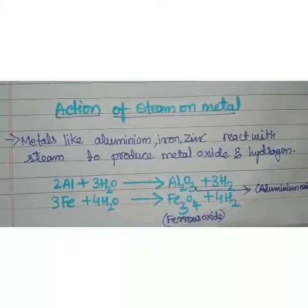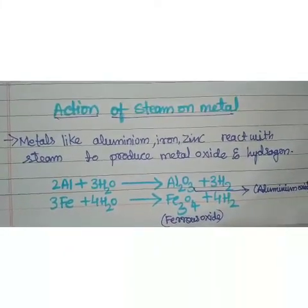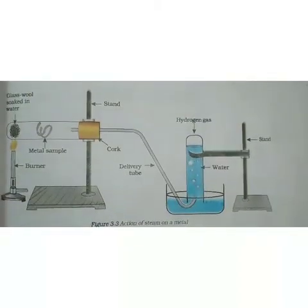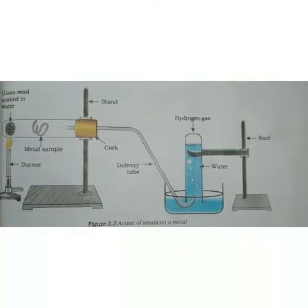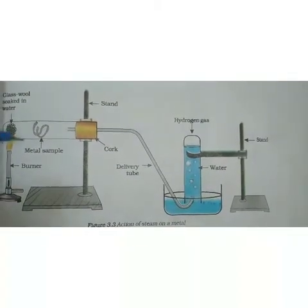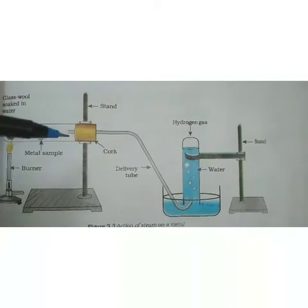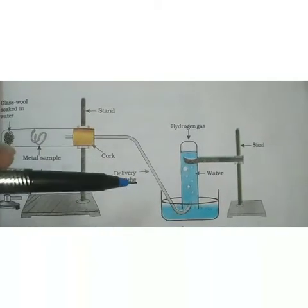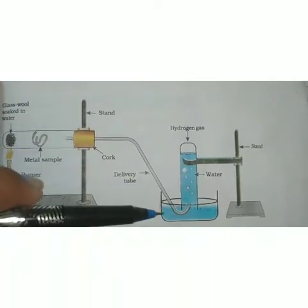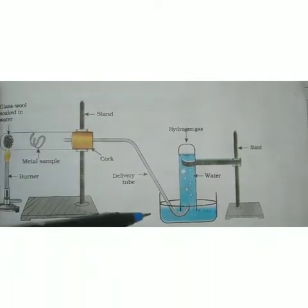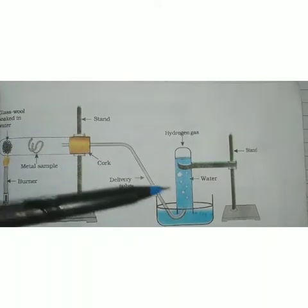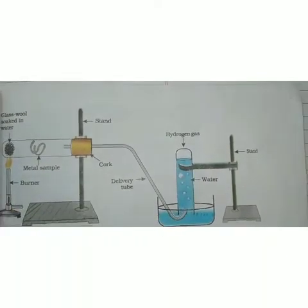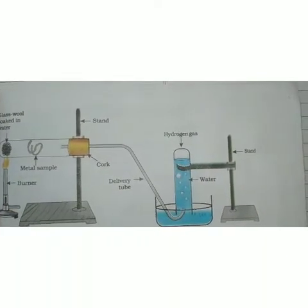There is one activity for this. For this experiment we need apparatus like a Bunsen burner, test tubes, cork, stand, delivery tube, conical flask, beaker, and other stands.